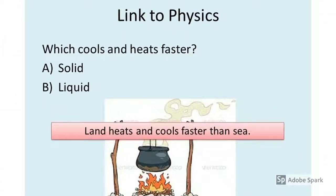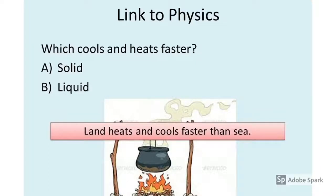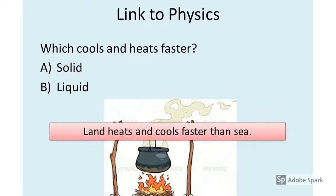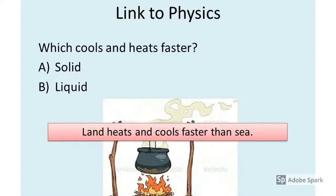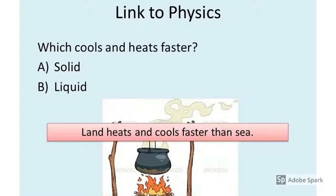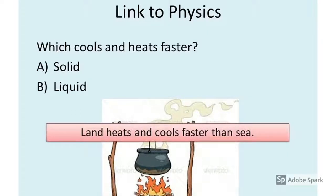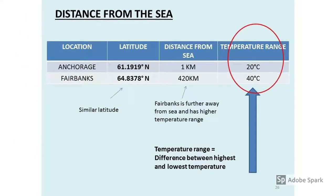The underlying concept for distance from the sea is the physics notion that land heats and cools faster than the sea. Land is a solid and the sea is a liquid — the liquid is harder to heat up and also harder to cool down. So when you have a large water body next to your location, it will affect the localized weather conditions and the climate.